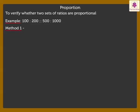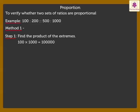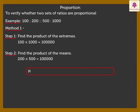Method 1: Step 1, Find the product of the extremes which is 100 into 1000 is equal to 1 lakh. Step 2, Find the product of the means. That is, 200 into 500 is equal to 1 lakh. Here, product of the extremes is equal to the product of the means.